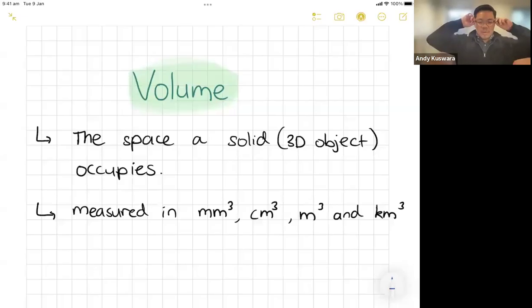What do you call a dog that meditates? A werewolf. An aware werewolf. Okay, talking about volume today. So volume is the space a solid, or otherwise a 3D object, occupies.